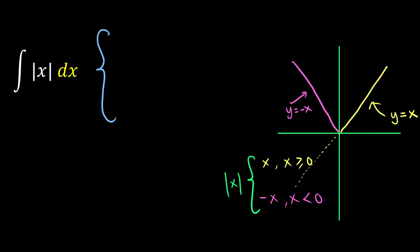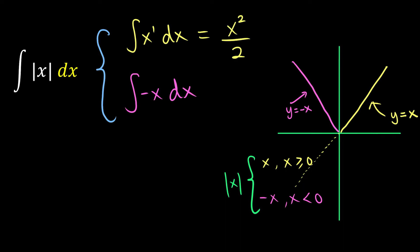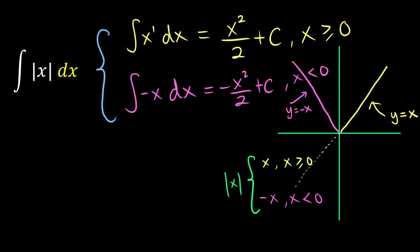Since we split it down to two parts, the integration is also going to be the same. We integrate positive x with respect to x, and the other part is the integration of negative x with respect to x. For x, since there is no written power the power is 1, so power increases by 1 divided by the new power: x squared over 2 plus C, valid when x is greater than or equal to 0. For the negative part, it's negative x squared over 2 plus C, valid when x is less than 0.